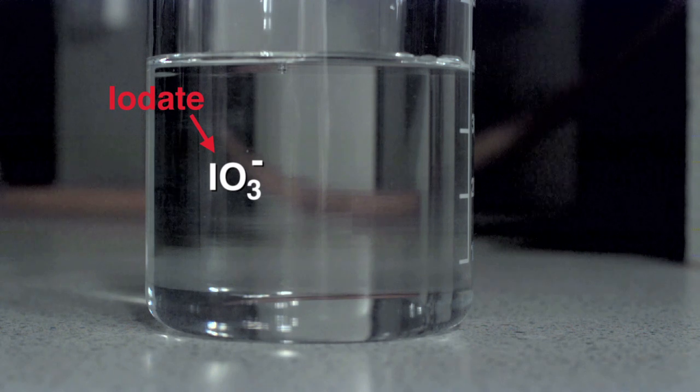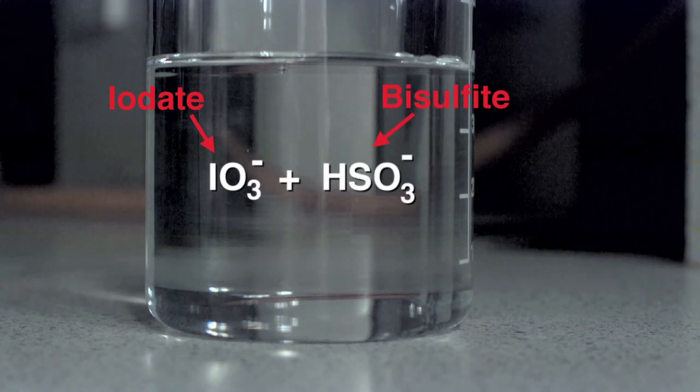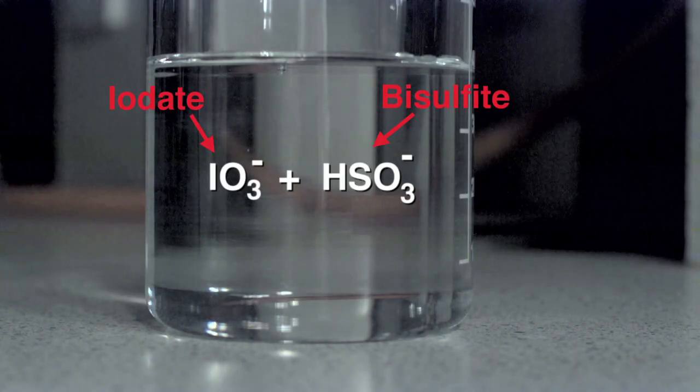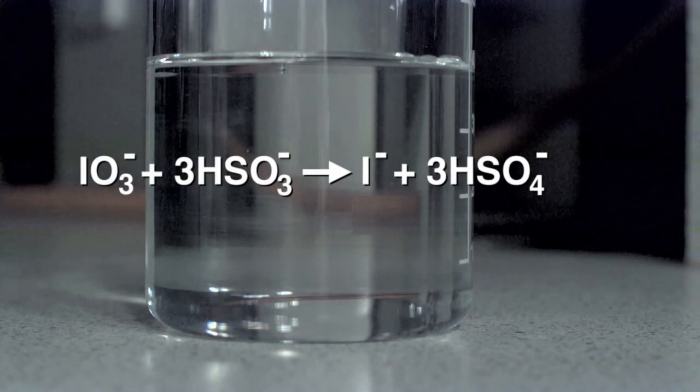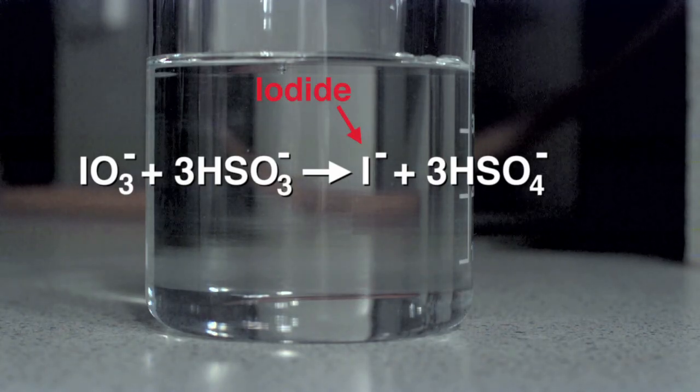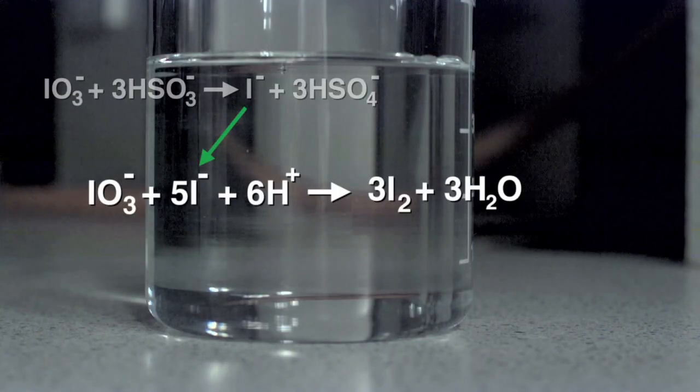Now there are different ways you can do the clock reaction and the way that we've done it is the so-called iodate way. I3- plus bisulphite, HSO3-. They react together so that the iodate turns into iodide. However, as soon as you have the iodide in solution, some of the iodate that is left reacts with the iodide to make iodine.